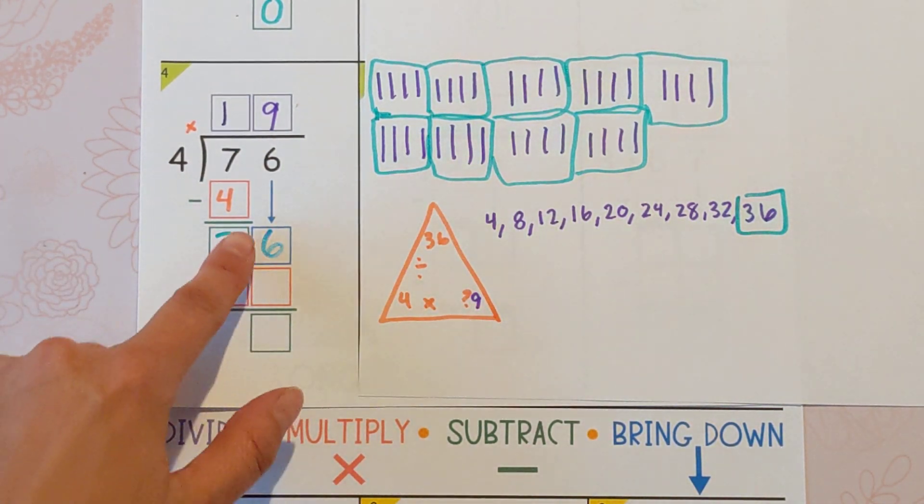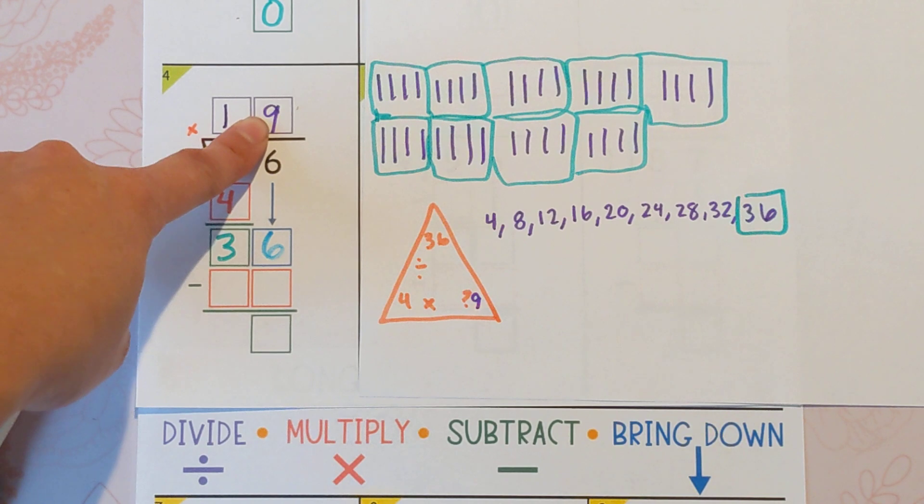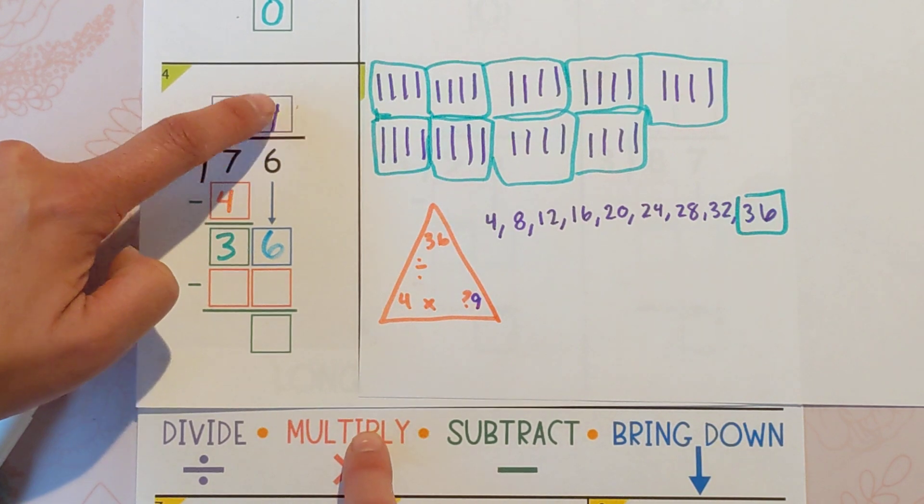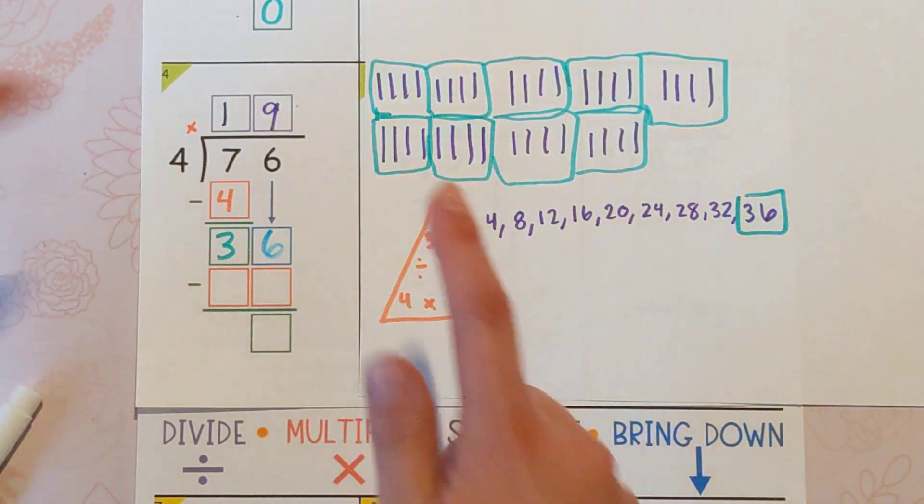So 36 divided by four is nine. So that was our division. We put it up there. All right, let's keep going. Next step is to multiply. So the last thing we wrote, which is the nine, and using that four. So multiply it back. Nine times four is 36.